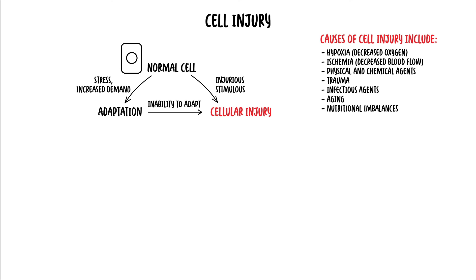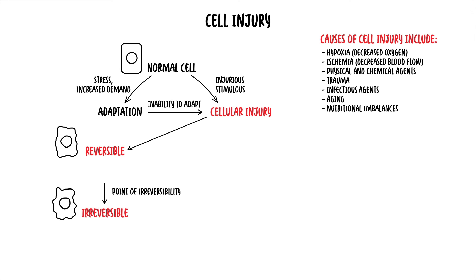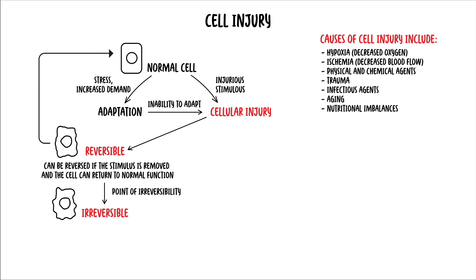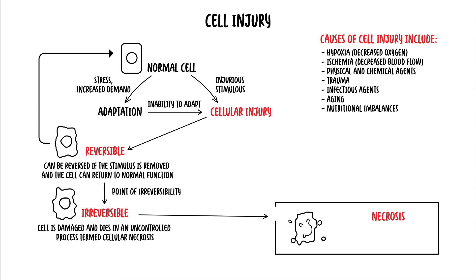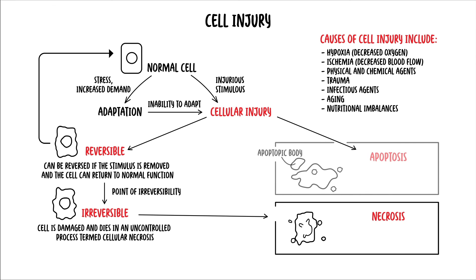Cellular injury can be divided into two types: reversible and irreversible. Reversible cellular injury can be reversed if the stimulus is removed and the cell can return to normal function. Irreversible cellular injury means the cell is damaged and dies in an uncontrolled process termed cellular necrosis. The other form of cellular death is apoptosis, which is programmed cell death.